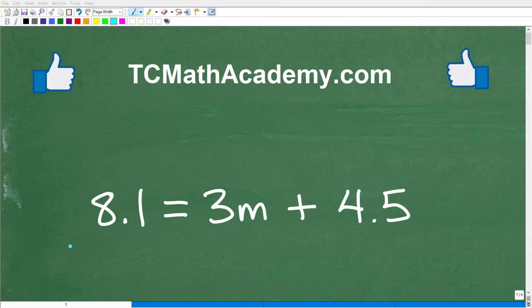Okay, so let's see if you have the basic algebra skills to solve this equation. The equation is 8.1 is equal to 3m plus 4.5. And what we want to do here is to solve for the variable m. What is m equal to? We have some decimals, so feel free to use your calculator. But if you could figure this out, go ahead and put your answer into the comment section. I'm going to show you the correct answer in just one second, then I'm going to walk through exactly how to solve this basic equation step by step.